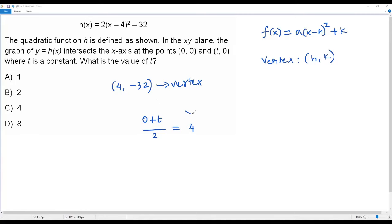Now let's simplify and solve for t in this equation. 0 + t is t/2 = 4. To get the value of t, I multiply both sides by 2. When I do so, the 2s cancel out. I'm getting t = 8.